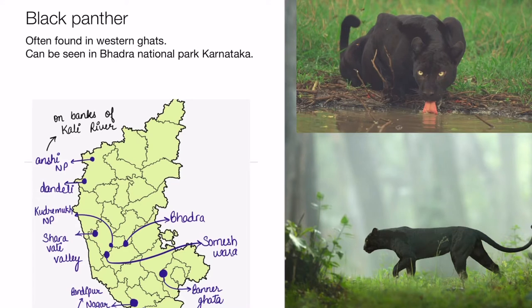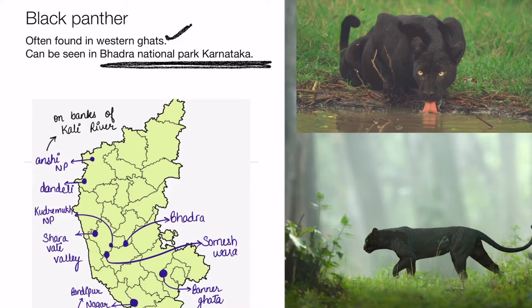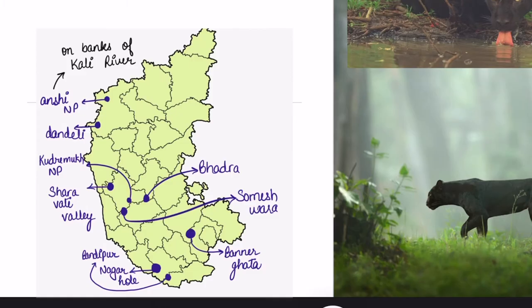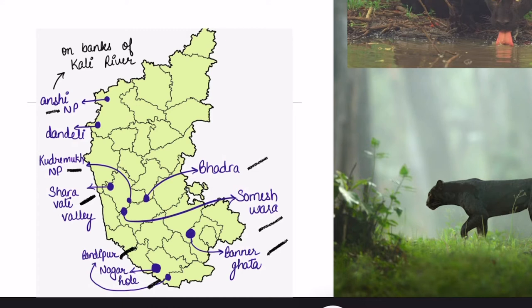The next animal is the black panther. You may have seen the Pink Panther cartoon — this is our black panther. Black panthers are found in the Western Ghats. Bhadra National Park in Karnataka is famous for black panthers. Let's revise Karnataka's national parks: Anshi National Park, Kudremukh, then Cauvery, Bandipur, Nagarhole, Bannerghatta, Bhadra, and Someshwar. Near Bhadra, black panthers can be easily seen.